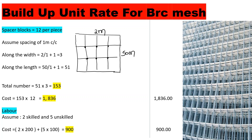Spacer blocks cost 12 shillings per piece. We assume a spacing of 1 meter center to center. These are the spacer blocks placed on the ground before laying the BRC mesh. Along the 2-meter width, the number of spacers is 2 divided by 1, plus 1, giving us 3. Along the 50-meter length, it is 50 divided by 1, plus 1, giving us 51.